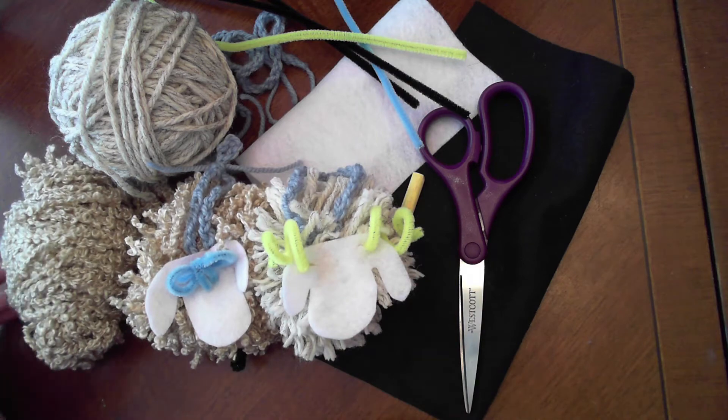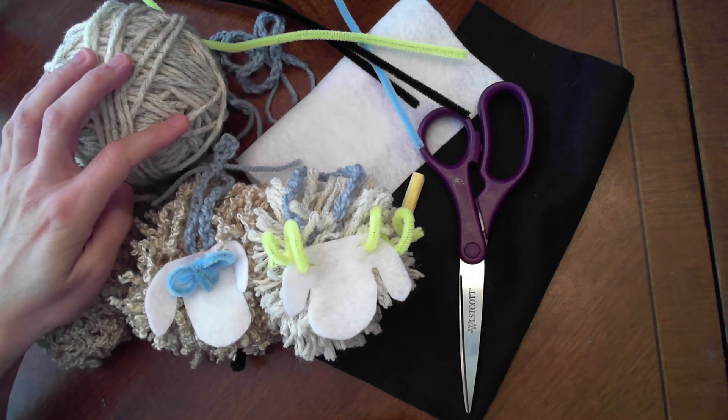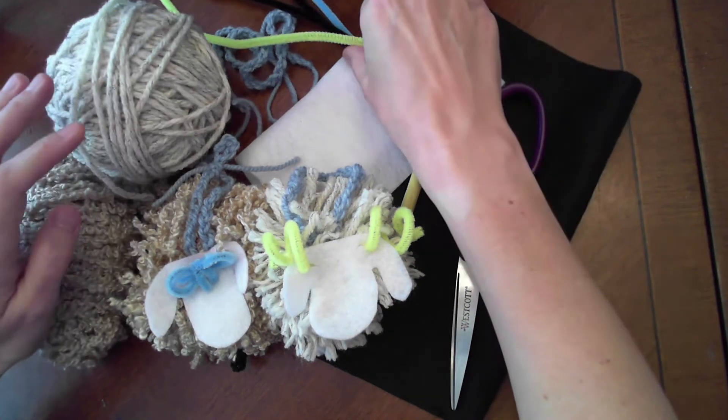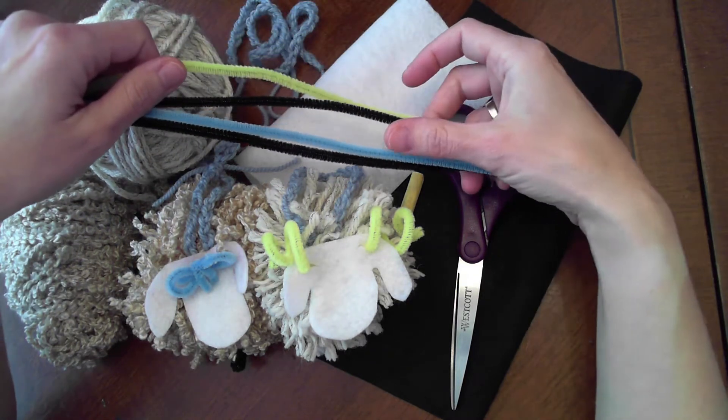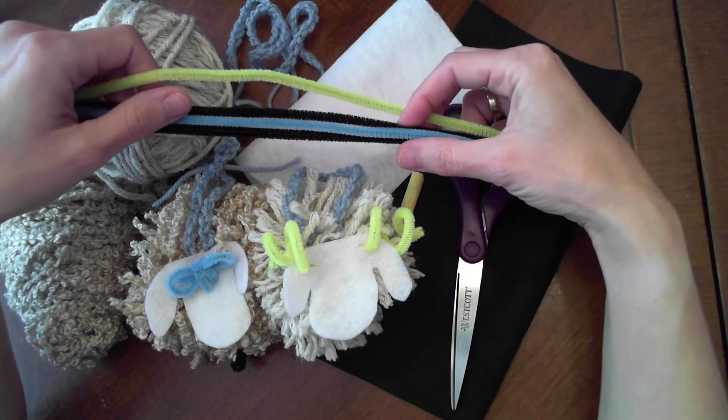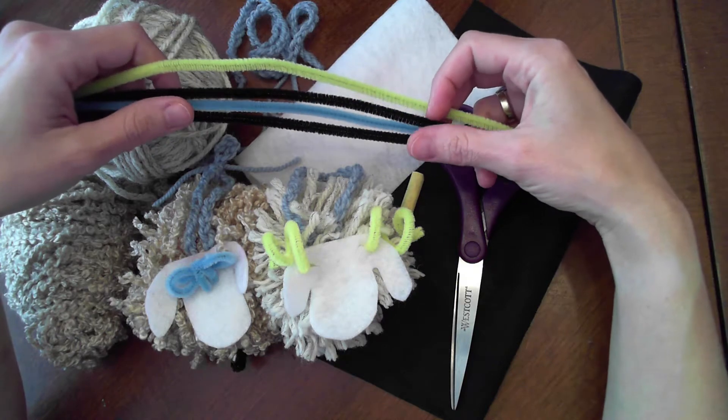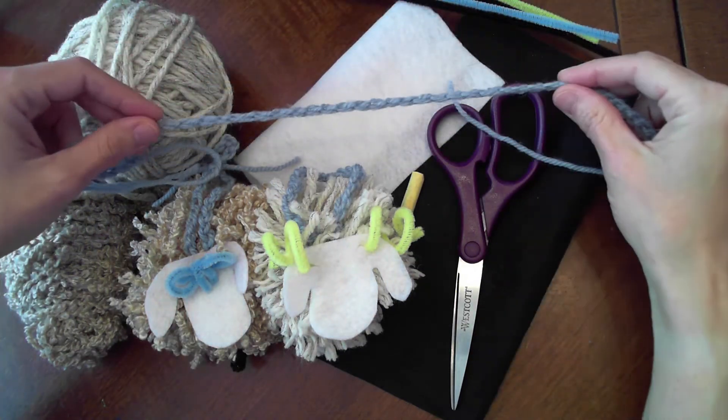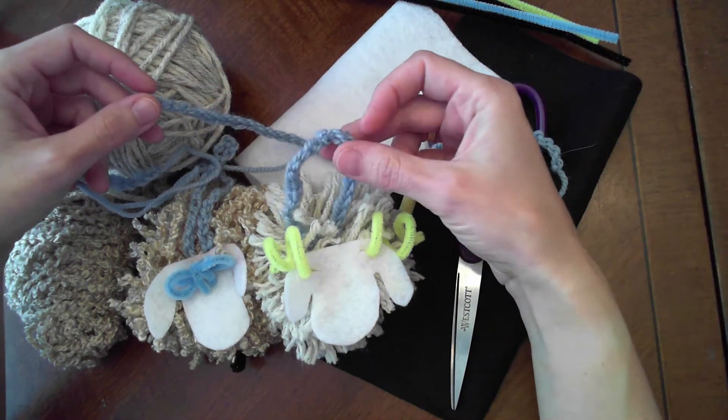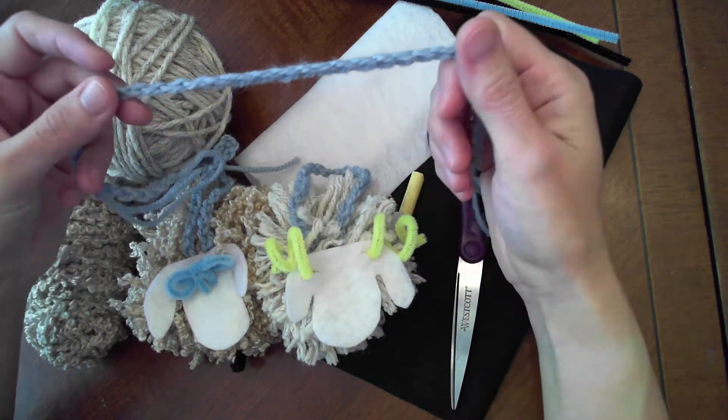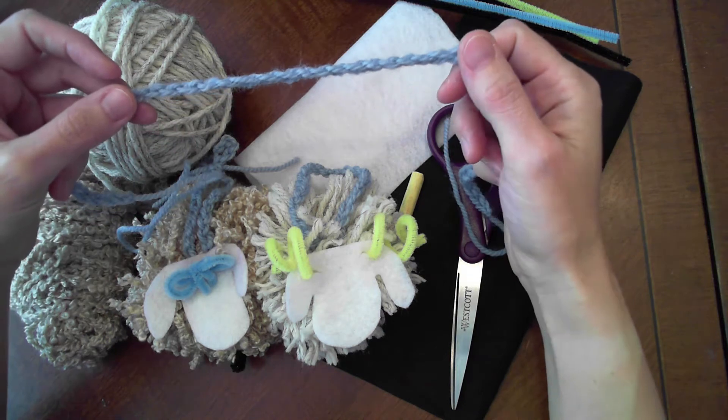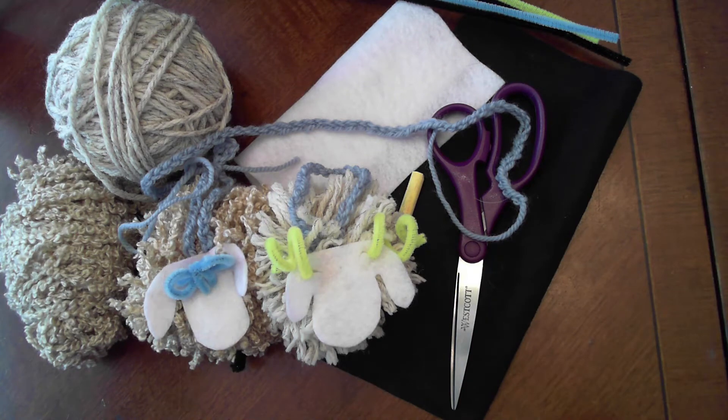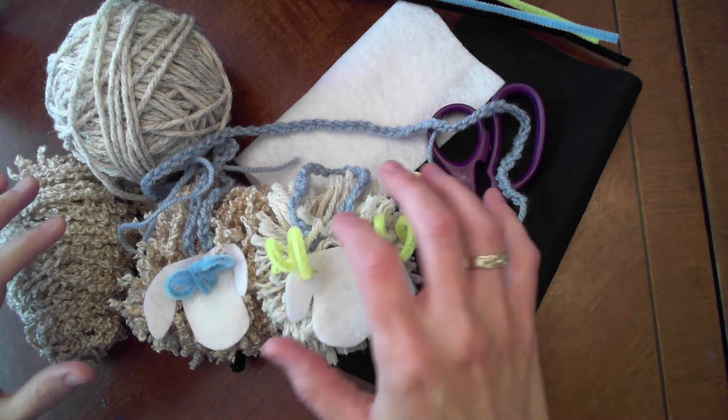We'll start off with making sure you have all the supplies you'll need: yarn for the pom-pom, scissors, black or white felt for the face, some pipe cleaners - yellow for the horns, blue for a bow, and then black for the feet. You'll just need two black pipe cleaners per ram to make the feet. And then a 15 inch i-cord to secure your ram and to make the loop or the hanger if you want. You can also just use regular yarn. I would suggest using a different color yarn if you have it available.